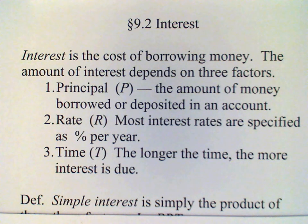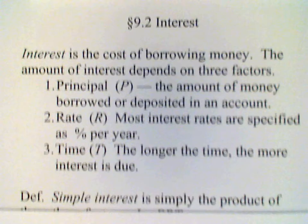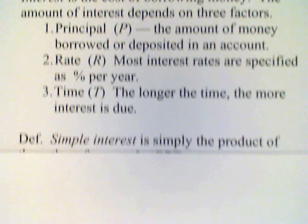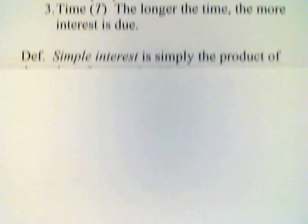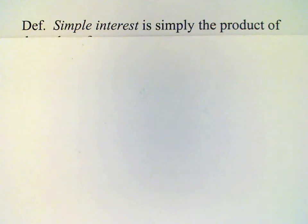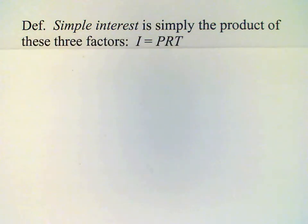Now, there are different ways of calculating interest, and we'll start with Simple Interest. To calculate Simple Interest, we just multiply the three factors together. So Simple Interest is just P times R times T.